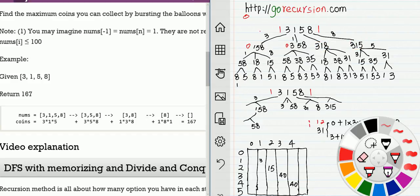So we get this recurrence tree. For example, if you burst 3 last, first you need to burst all of the balloons on the left, which is empty, and you also need to burst all of the balloons on the right, that's [1,5,8].